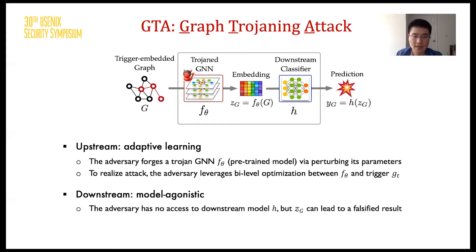With those ideas in mind, we designed GTA, the Graph Trojan Attack against GNNs. GTA makes perturbations in upstream training and takes effect in downstream classification. In upstream training, GTA forges a Trojan model by injecting a backdoor into the GNN with backdoor training. It also relies on a bi-level optimization process to further optimize the trigger for better effect. In downstream classification, GTA has no assumptions about what the classifier is, even if the classifier is constructed by a downstream user and fine-tuned. The Trojan model can still encode trigger-embedded graphs and result in a falsified prediction.